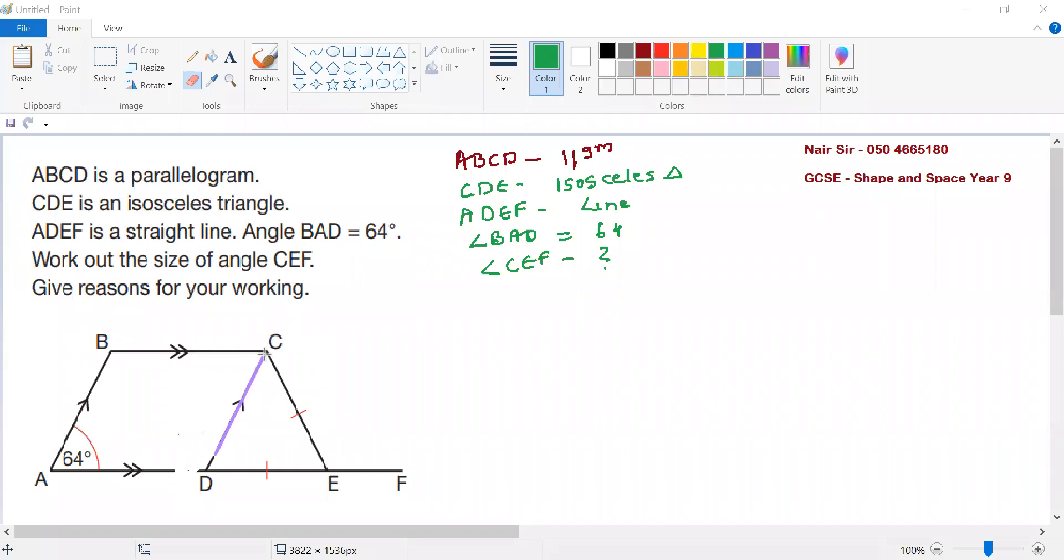Drawing the lines here and here. Good. Now I will name this A, name this B, and name this D.